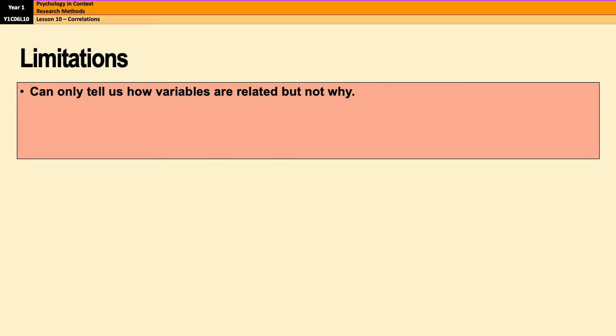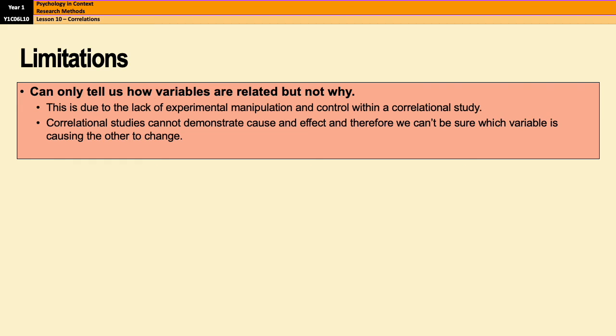So moving on to limitations. There are three that I'm going to show you. The first one is the fact that it can only tell us how variables are related, but not why they're related. And that's due to the lack of experimental manipulation and control within a correlational study. Because they can't demonstrate cause and effect, we also can't be sure which variable is actually causing the other variable to change, which means we also have an issue with the direction of causality.